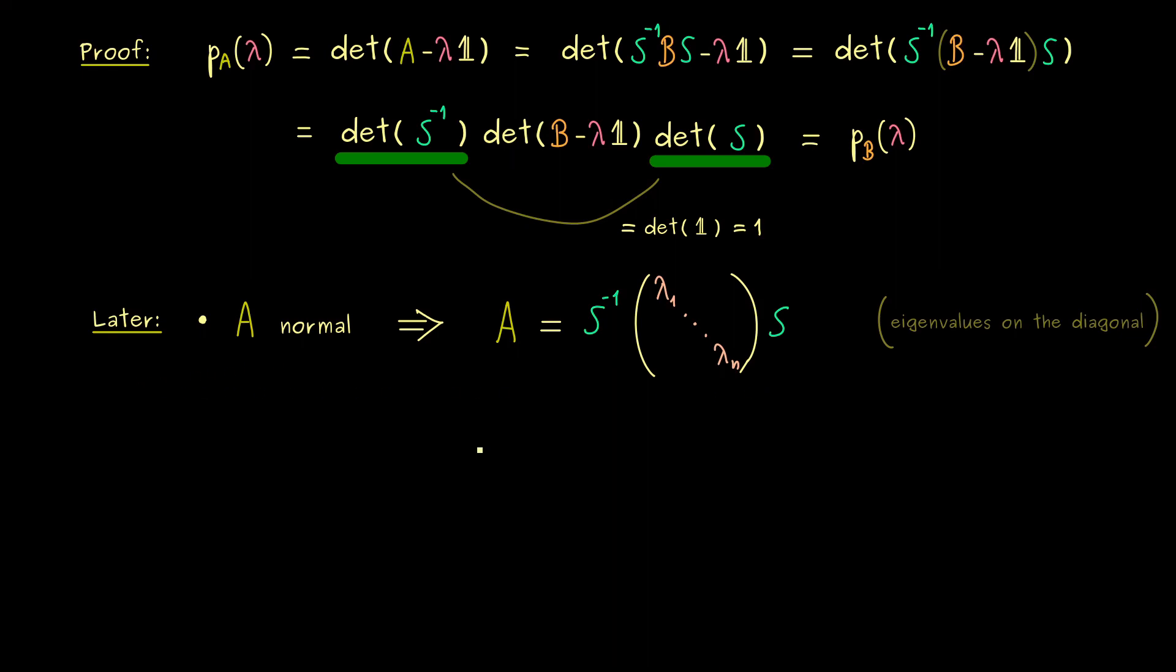But we will also see, it holds for more matrices as well. However, the crucial thing here is, it will not hold for just any matrix A. In fact, for a general square matrix, we only have a weaker result.